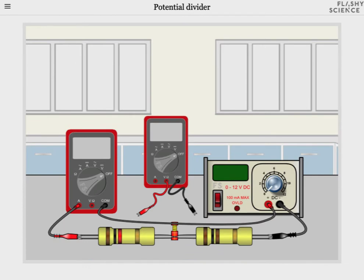Welcome to the FlashyScience Potential Divider experiment. On the screen you'll see two digital multimeters or DMMs, a power supply for applying potential difference and two resistors.